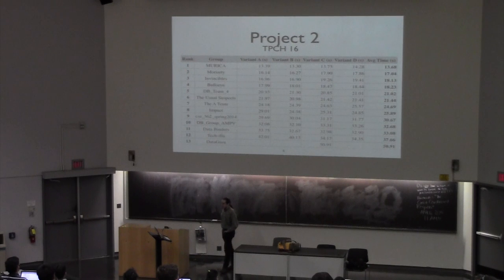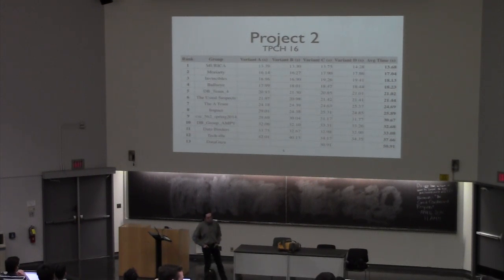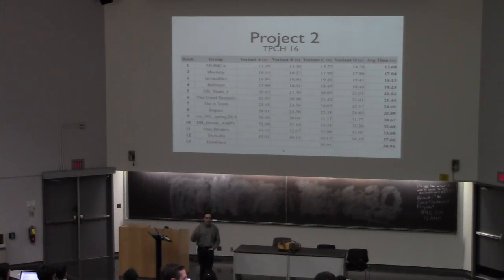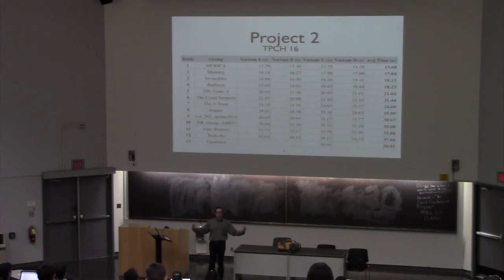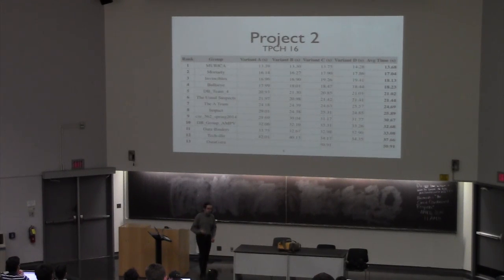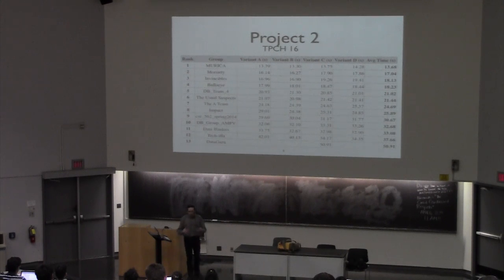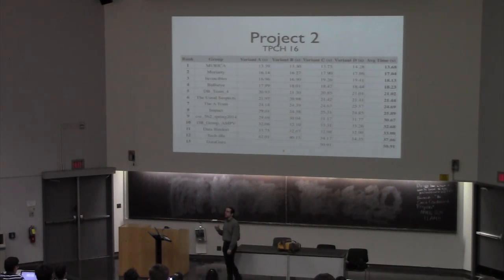Getting back to the subject at hand, the last couple of lectures have been on the subject of keeping track of how data changes. This was intended as a way of keeping track of what kind of changes are being applied by different processes, allowing multiple different transactions to coexist in the same system at the same time. But it turns out there are a couple of other things that databases need to be able to do, and one of those is dealing with failures.